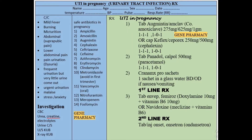So let's start with the chief complaints. First of all, if you have a patient in hospital OPD, they will present with these symptoms: mild fever, burning urination, abdominal suprapubic pain, lower abdominal pain, pain on urination, dysuria, frequent urination but very little urine comes out, urgent urination, malaise, and stress and anxiety.